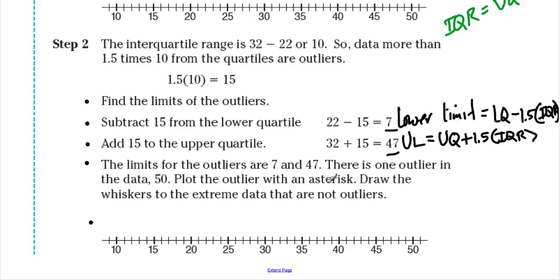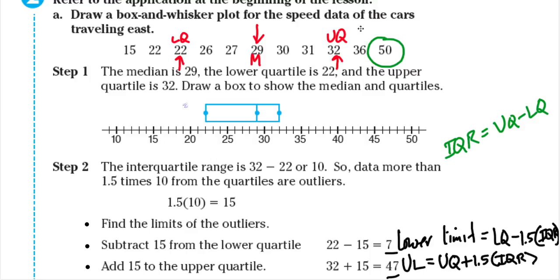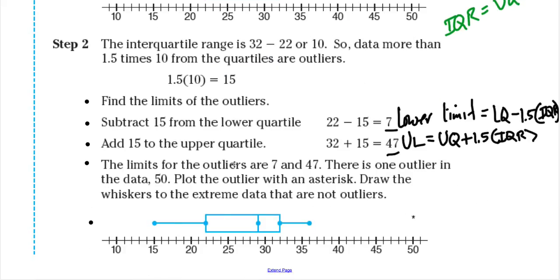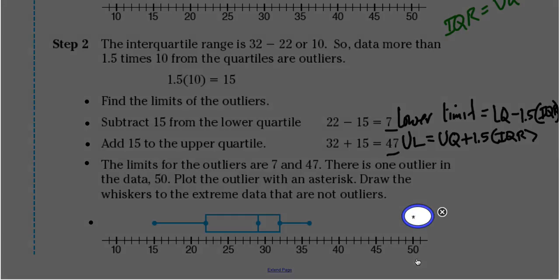Since there is one outlier, we plot it with an asterisk or star. Draw the whiskers to the extreme data points that are not outliers. Instead of creating a whisker all the way to 50, we only draw the whisker to 36, which is our new upper extreme. Since 50 is an outlier, we draw the whisker to 36 and put a star next to 50 to mark it as the outlier.